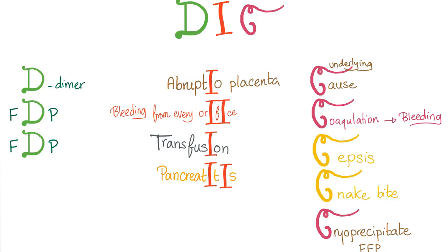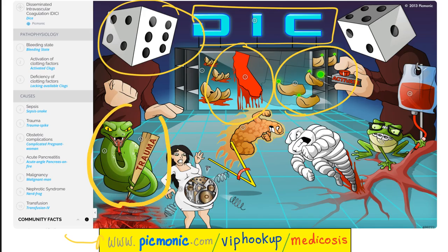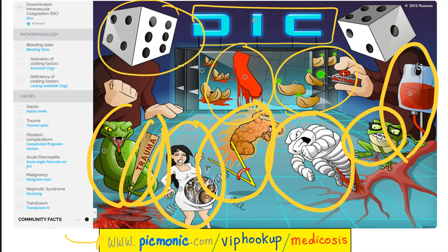DIC is depicted by the dice — this is from Picmonic. DIC is both a bleeding state and a coagulation state. Precipitating factors include snakebite, trauma, obstetric complications such as abruptio placentae or retained products of conception, acute pancreatitis, tumor especially solid tumors, nephrotic syndrome, and blood transfusion. The patient is bleeding from every orifice, every scratch, every wound. In the previous video, I gave two clinical scenarios: a patient with septic shock followed by ARDS followed by DIC, and a lady with abruptio placentae with amniotic fluid embolism followed by DIC, which is the most common cause of death in that case.